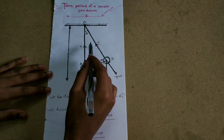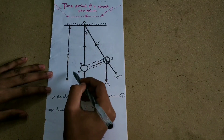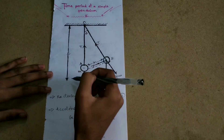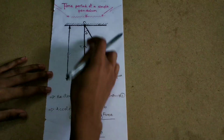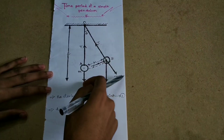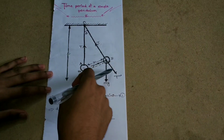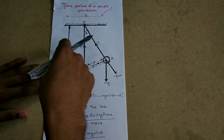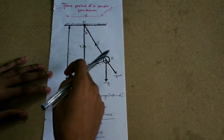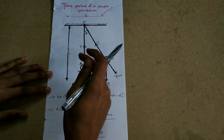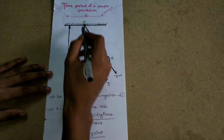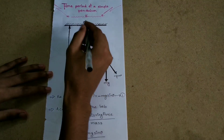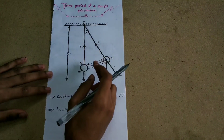Consider a pendulum of length L, suspended from a fixed point O. Let M be the mass of the bob. When the bob is at position A, it has weight.